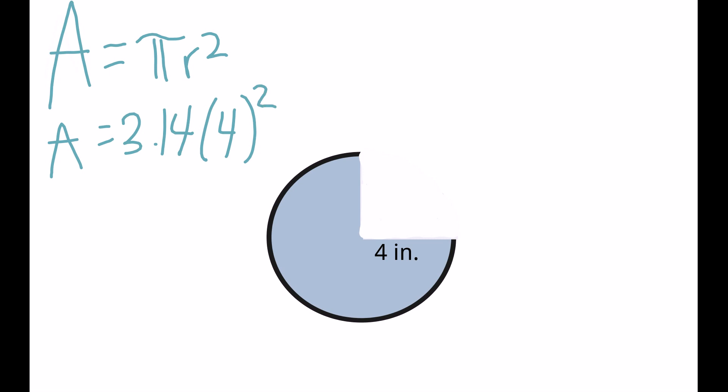Remember, using our order of operations, we're going to square 4 first, so we get area equals 3.14 times 16. Then we just need to multiply, and we get 50.24. That would be if the circle was complete.